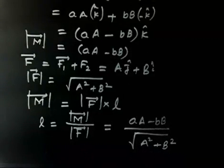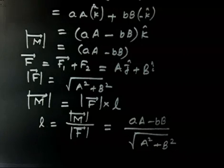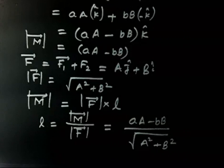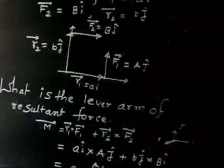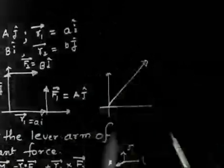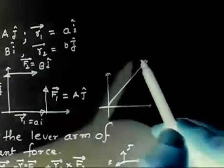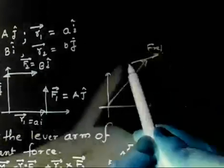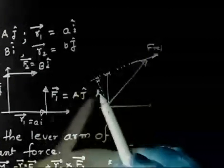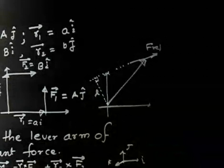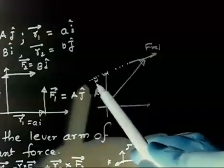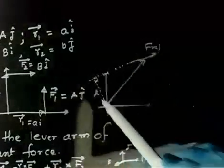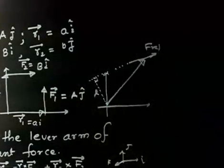So this is the resultant lever arm. What we have learned here is nothing more than the previous problem — we have done the same thing. If you know the total force and the total moment, you can always find the lever arm, which is the perpendicular distance from the origin to the resultant force line. If all forces have a resultant in some direction, you can draw a perpendicular from the origin — that length L is the lever arm.